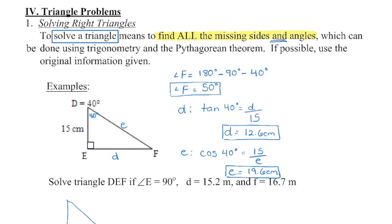There are two strategies you have for finding missing sides and angles in a right angle triangle. You can either use Pythagoras' theorem, which you've practiced in previous years, or you can now use your primary trigonometric ratios as well.